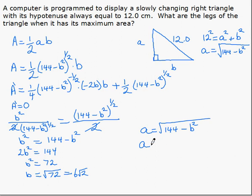minus B squared. A is equal to the square root of 144 minus B squared, which is 72, which is the square root of 72,